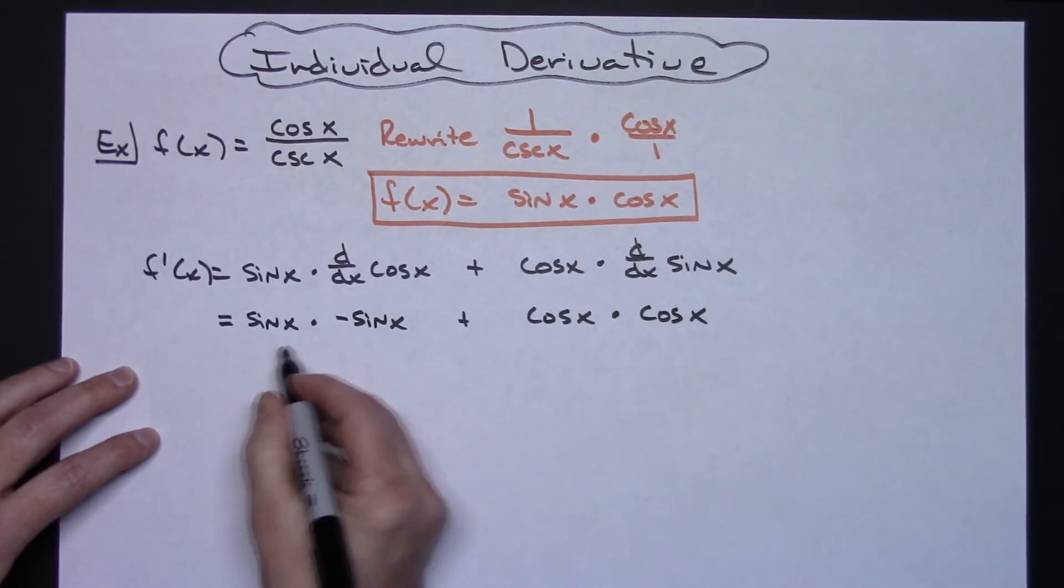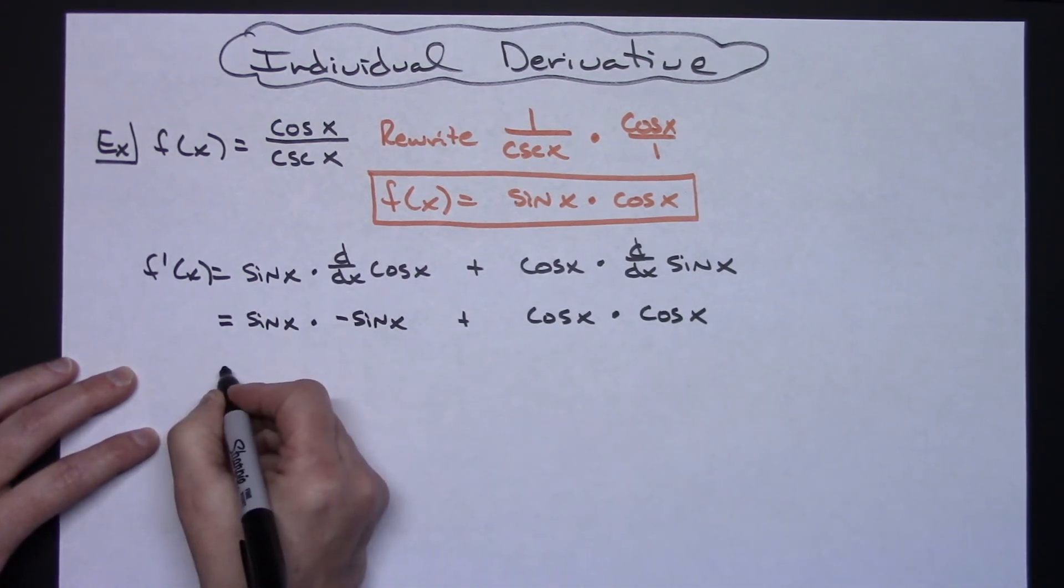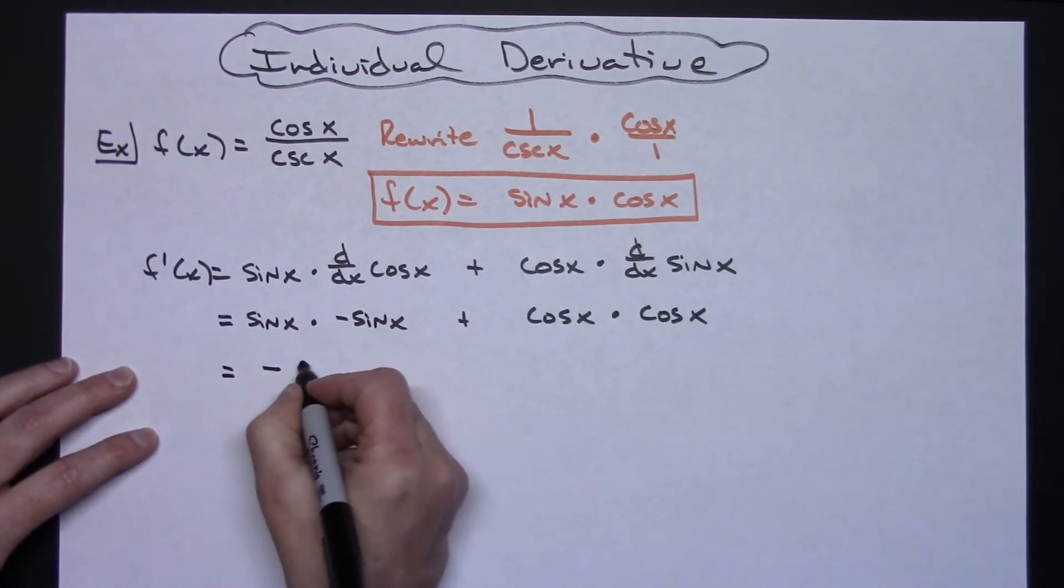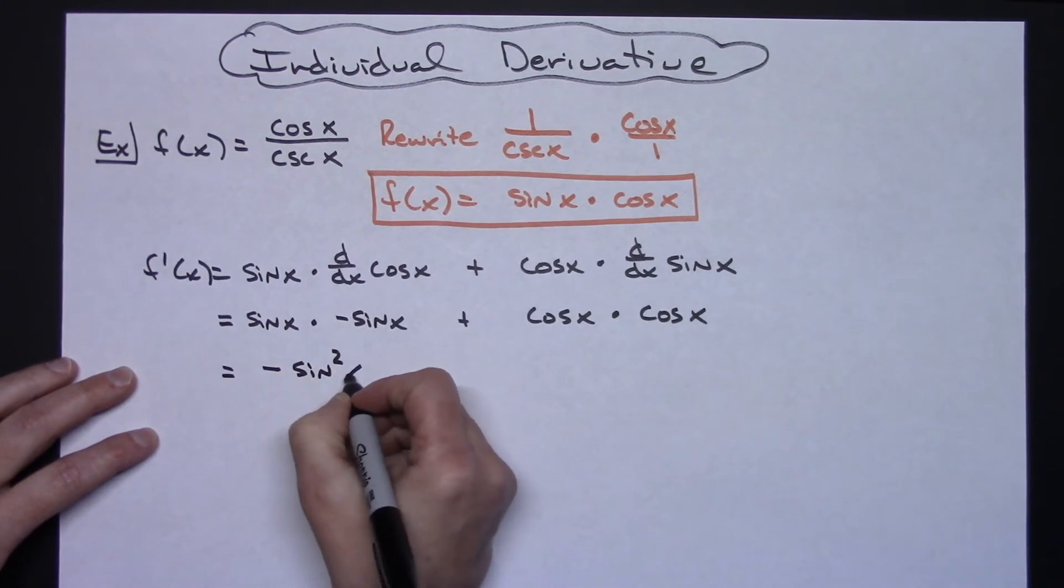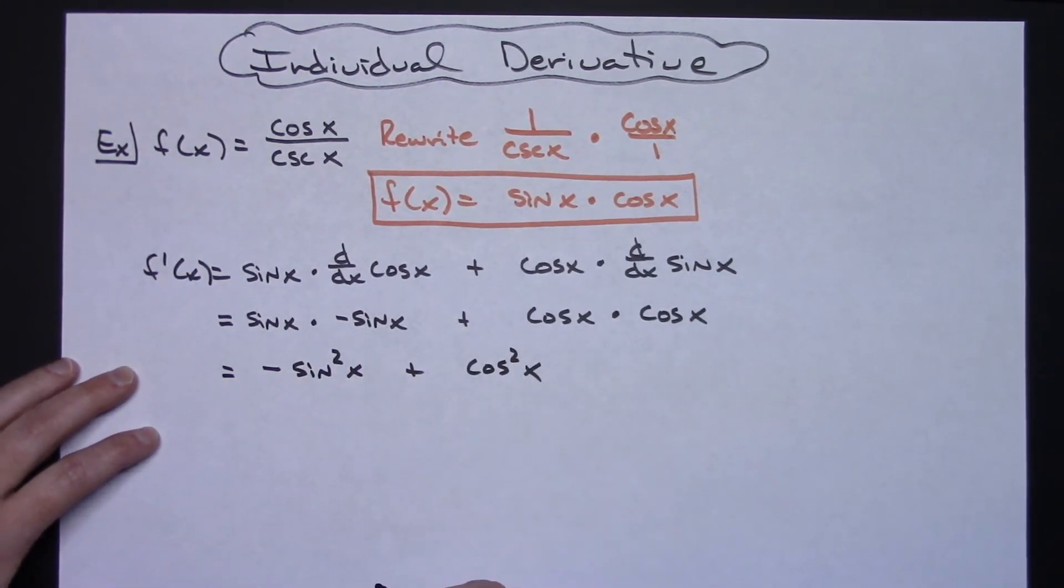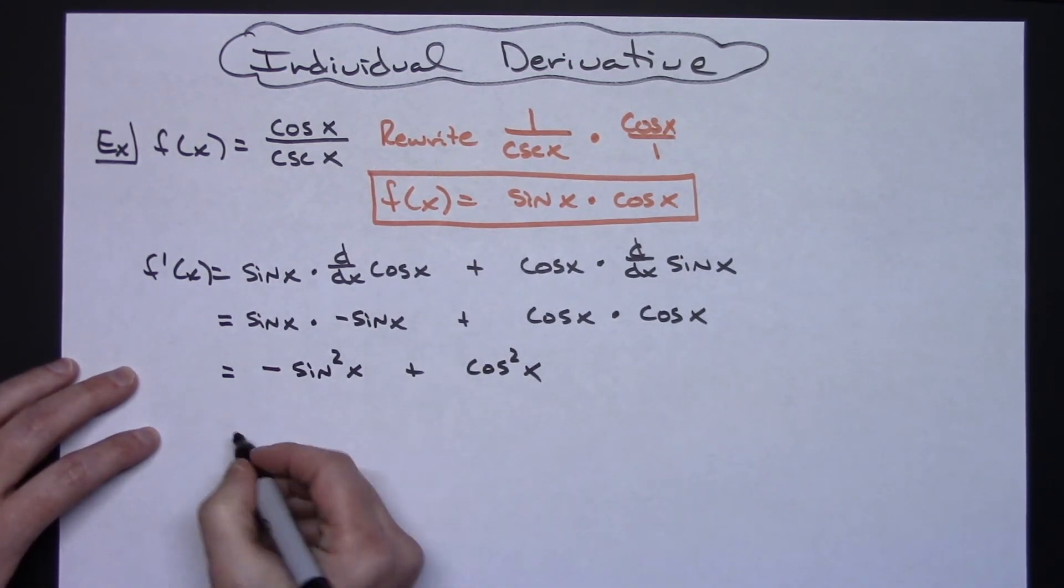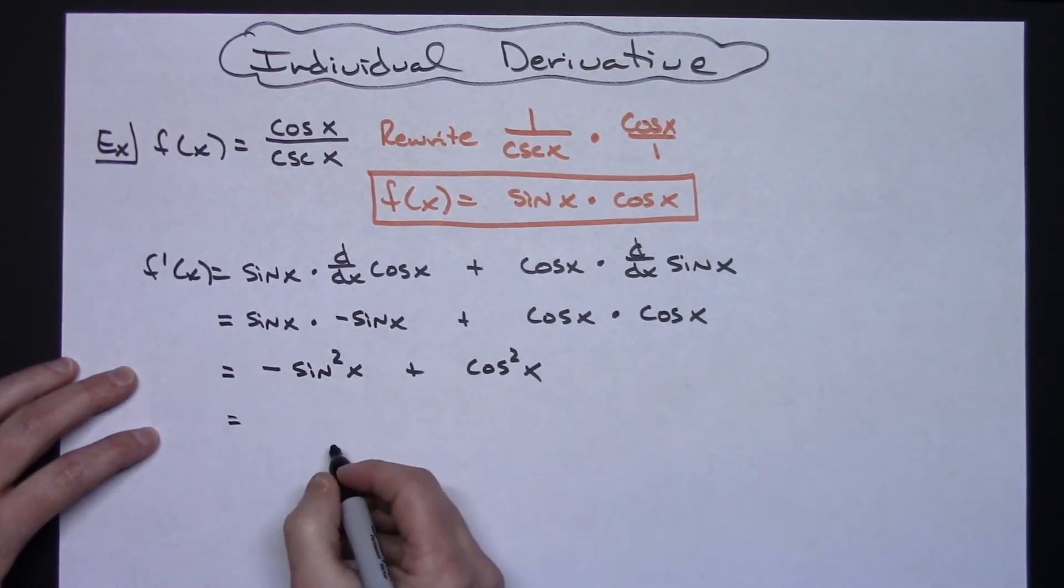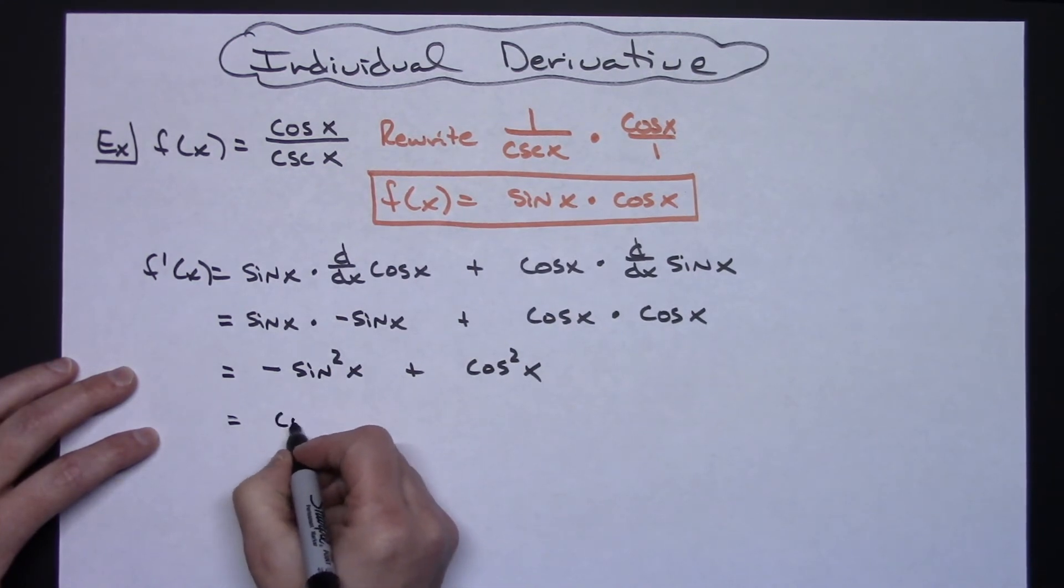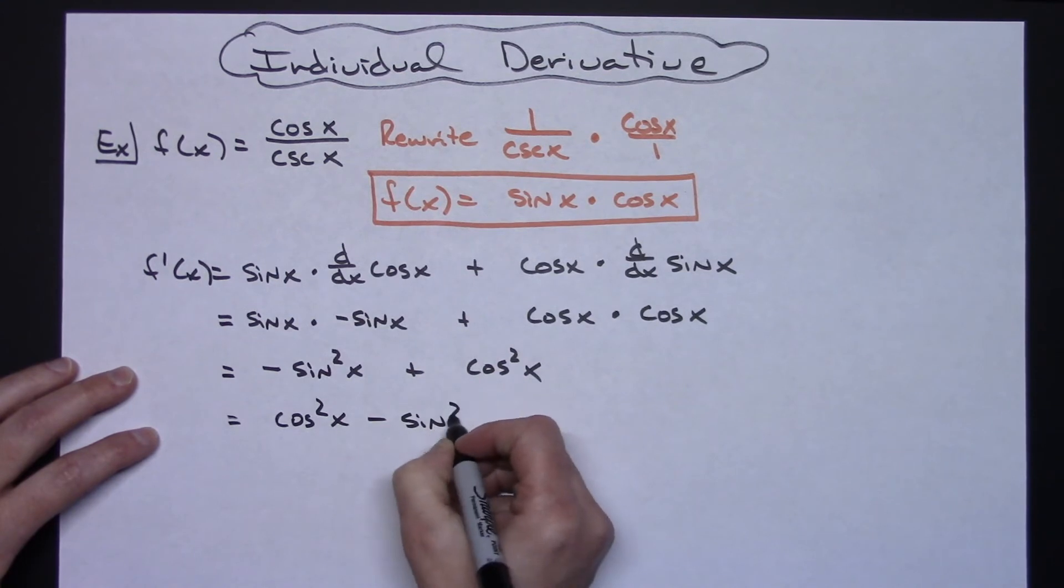Now if I rewrite that, I've got a couple sines over here, a couple cosines over here, I'm going to have negative sine squared x plus cosine squared x. And then we never want to leave a negative there in front, so if I rearrange those terms so it looks neater, I'm going to have cosine squared x minus sine squared x.